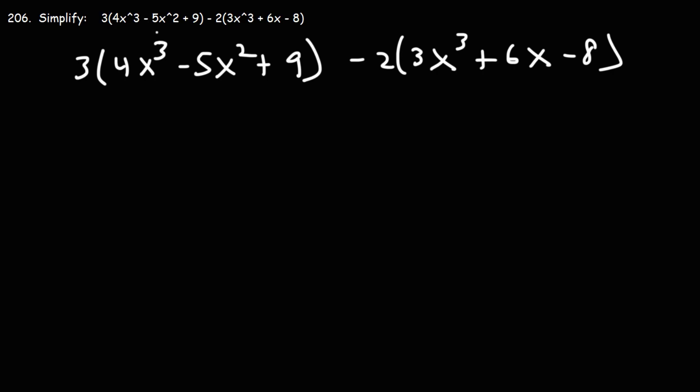Let's begin by distributing the 3 on the left. 3 times 4 is 12. And then we have 3 times negative 5x squared, that's negative 15x squared. 3 times 9 is 27.